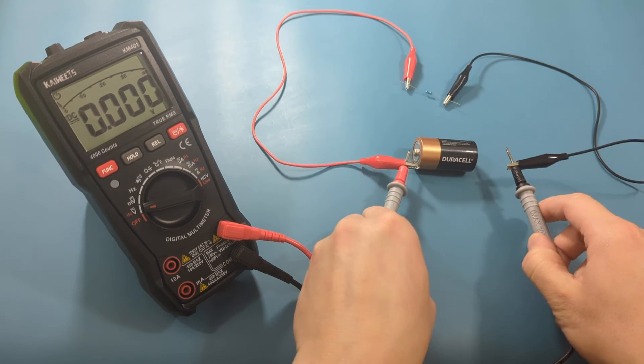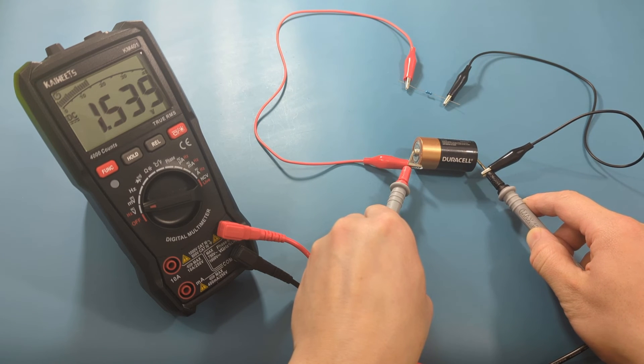Place the red probe lead on the positive end of the battery and the black probe lead on the negative end.